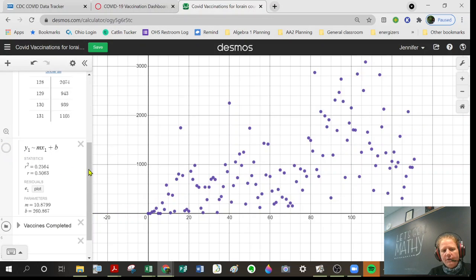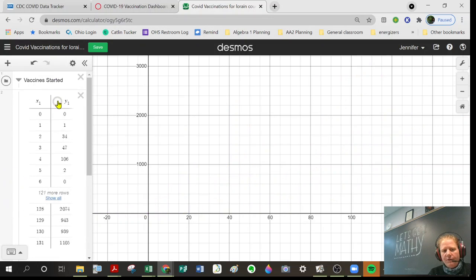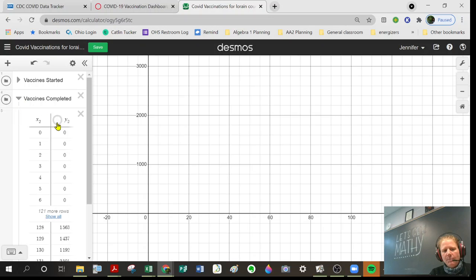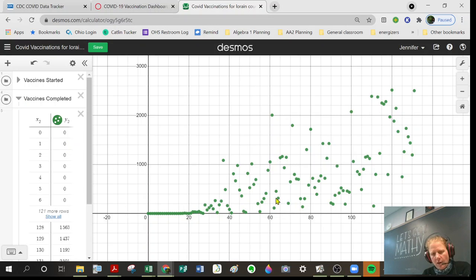I'm going to turn off my vaccine started graph and go to my vaccines completed and turn that on. You can see the graph is a little bit similar, yet different.